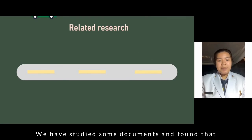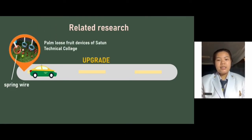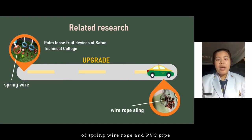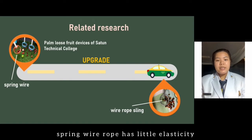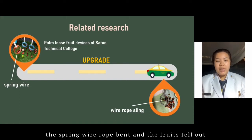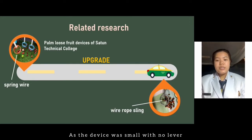We have studied some documents and found that Stone Technical College, Thailand, created a device using the principle of spring wire rope and PVC pipe, but there were limitations. The spring wire rope has little elasticity, making it hard to return to its original shape. After a short while of using, the spring wire rope bent inward and the fruit fell out. As the device was small with no lever, to take the fruit out, one must turn the hand, making the hand exchange difficult.